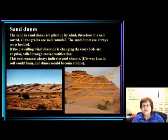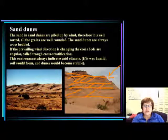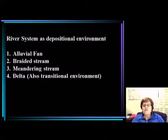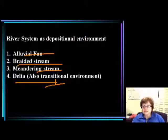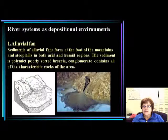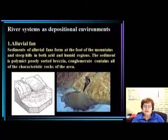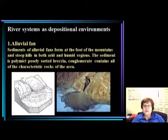If the climate changes and becomes more humid, sand dunes would become stable and plants would start growing on them. Now we are at the fluvial or river system. You will have to know the alluvial fan, braided stream, meandering stream, and delta — remembering that the delta also belongs to the transitional environment. Let's start with the alluvial fan, which we already mentioned in the desert context.